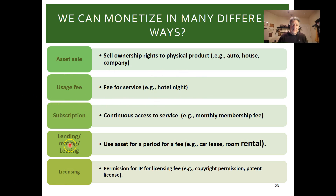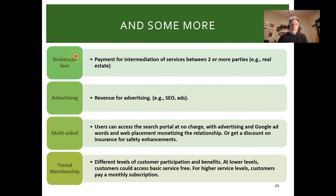Lending, renting, and leasing — like a car lease or room rental — is long-term, different from a short-term usage fee. Licensing is permission for intellectual property to be used — for a song, literary work, or photo. You need copyright permission, or if something is patented, you may pay a license fee to use it. Brokerage fees apply when selling real estate or stock — a payment for the broker facilitating the deal. Advertising includes SEO and ads in newspapers or Google.